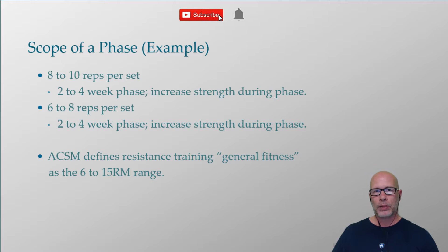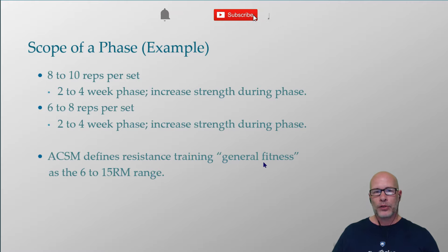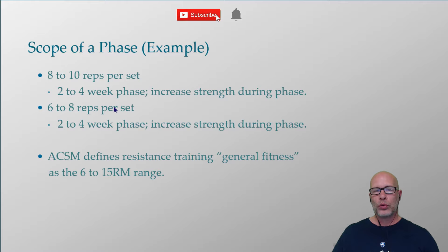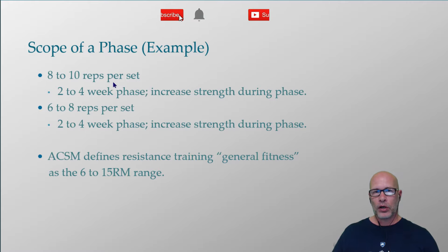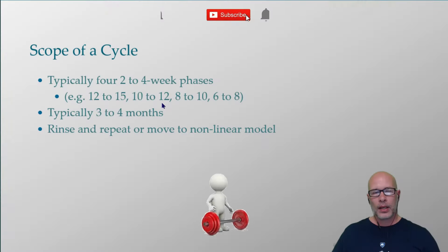Then, depending on the client, I might drop them to six to eight repetitions per set. In a perfect world, you want to sooner rather than later get them down to six to eight reps. The ACSM defines resistance training general fitness as the six to fifteen repetition range. So this is a way to systematically train clients through that range — starting at 12 to 15, moving down to 10 to 12, then 8 to 10, then 6 to 8. This is an example of linear periodization.